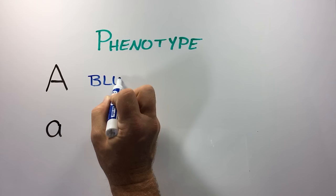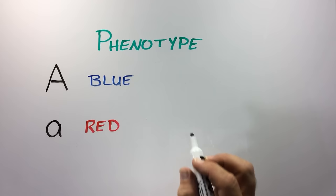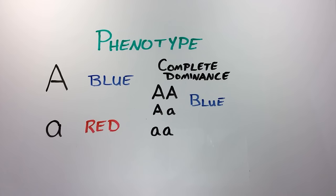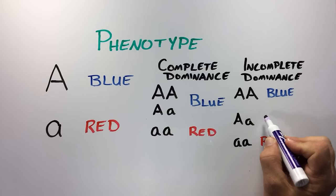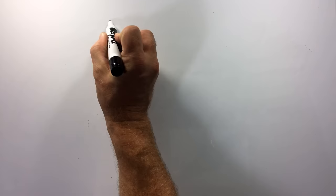How the alleles and combinations of alleles affect the features of an organism is called the phenotype. Suppose the big A allele codes for a blue color pigment and the little a allele codes for a red color pigment. Under complete dominance, both the homozygous big A and heterozygous genotypes produce the blue phenotype, while only the homozygous little a genotype produces the red phenotype. Under incomplete dominance, the heterozygotes produce an intermediate purple phenotype.